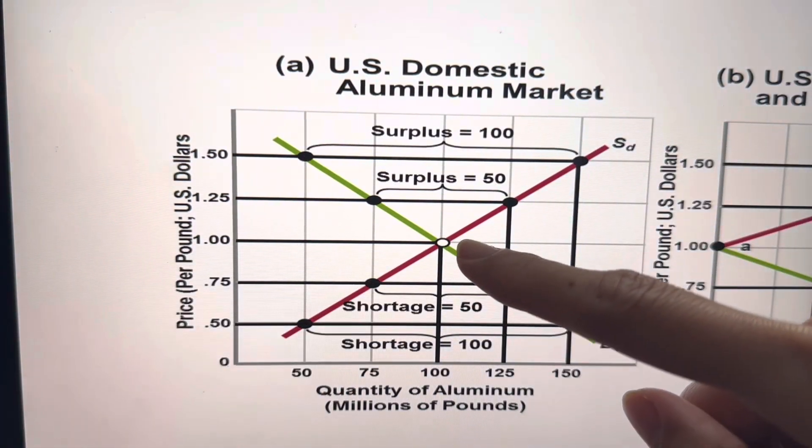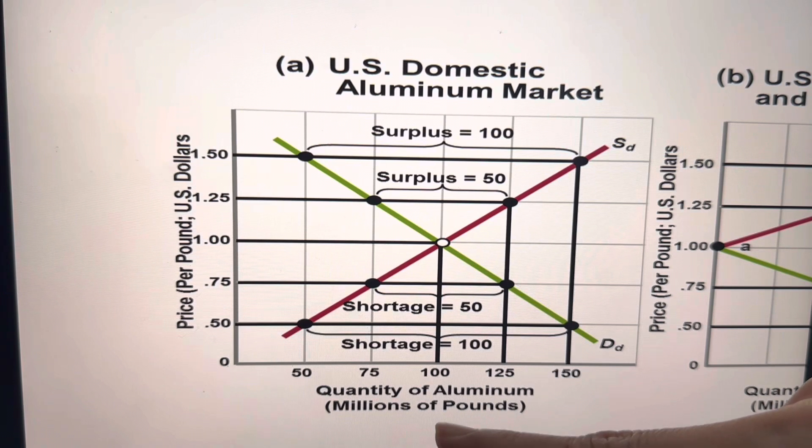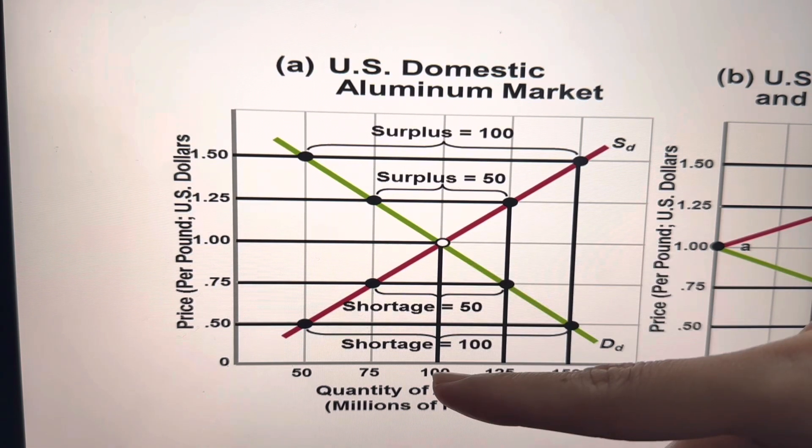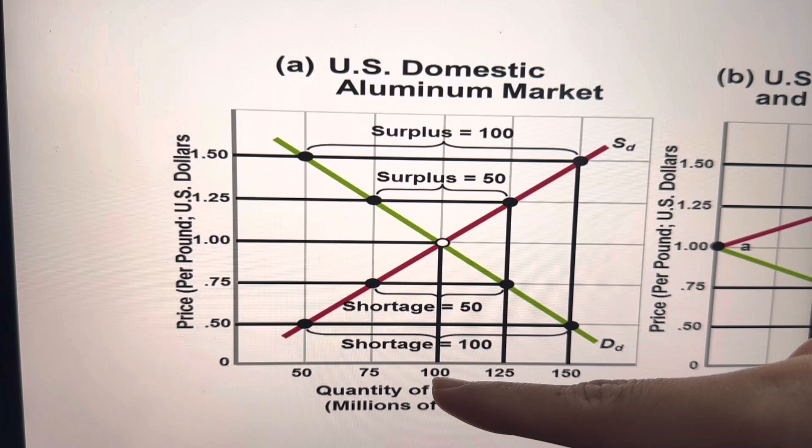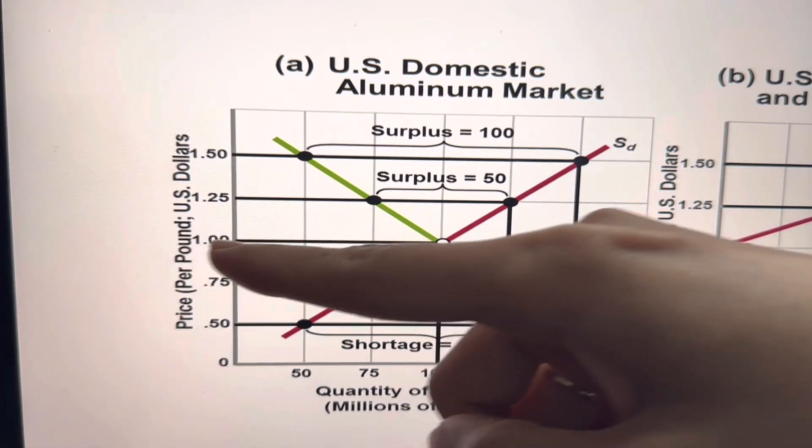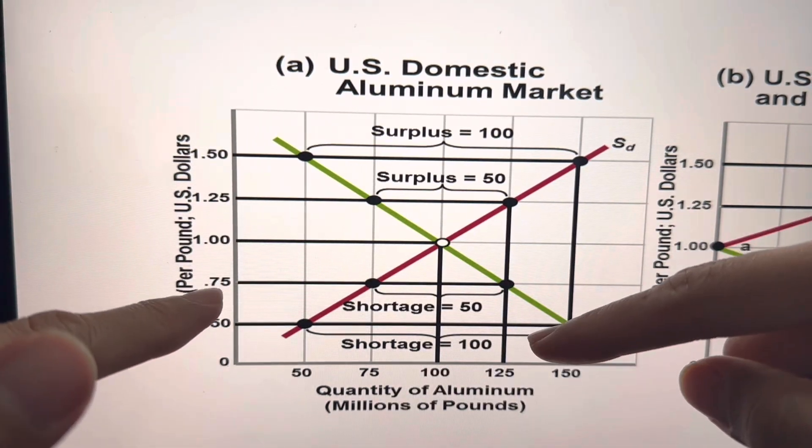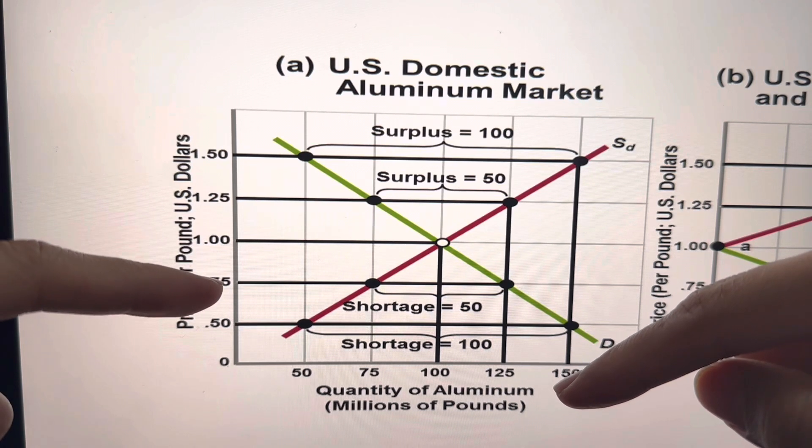Where the two lines intersect, you have quantity of aluminum is in equilibrium, which is 100 millions of pounds. And this is the domestic price, $1. You're at 75 cents, which is lower than the domestic price.